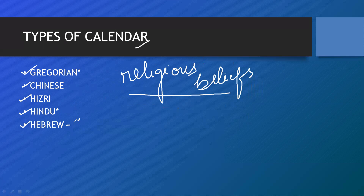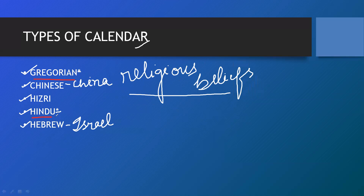The Hebrew calendar is basically the Jewish calendar of the country of Israel, located in the Middle East. The Chinese calendar is of China. I have given star marks over Hindu and Gregorian because these are the two important types of calendars that you are going to read, so let's learn about them in detail.